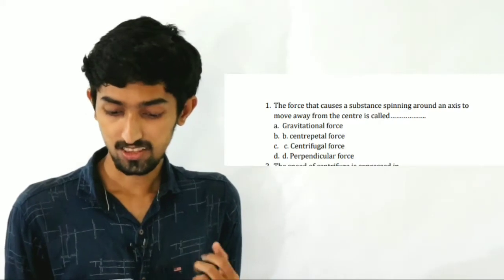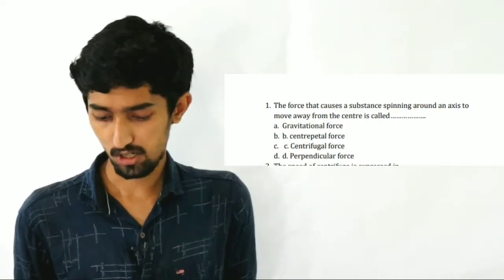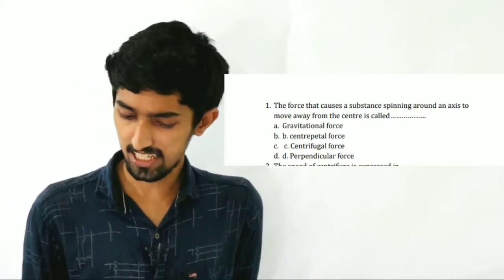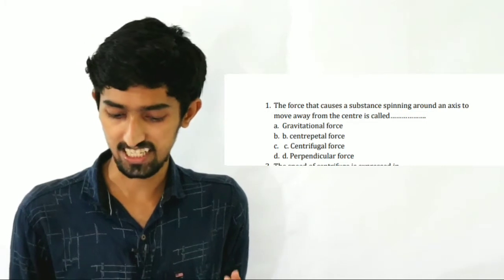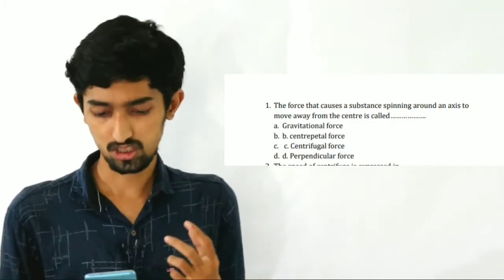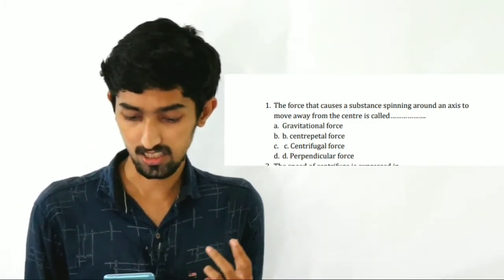One question is: The force that causes a substance spinning around an axis to move away from the center is called — what is the answer? It is centrifugal force. That is, it helps to move away from the center — that is centrifugal force.